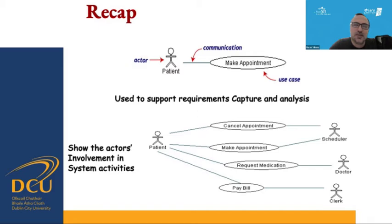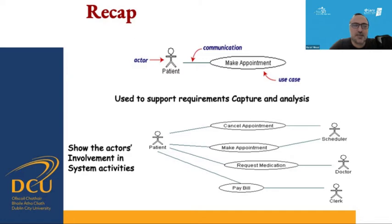We can consider it as part of the use case, and the use case will be represented by having some sort of an appointment making system. We can have more than one actor on the system, and this is usually the case. So we could have a scheduler, a doctor, and a clerk. The scheduler could be a human or a machine, but the patient and the scheduler share two commonalities: cancelling an appointment and making one.